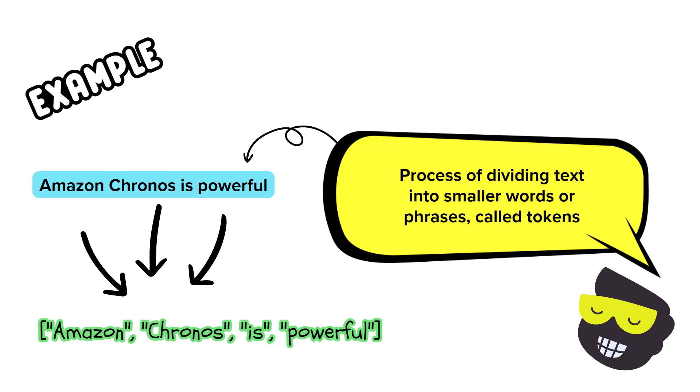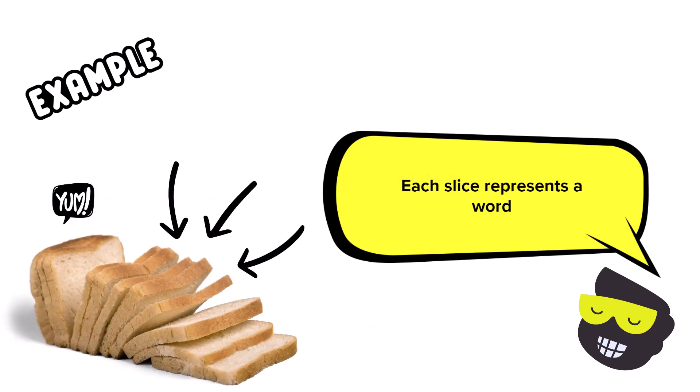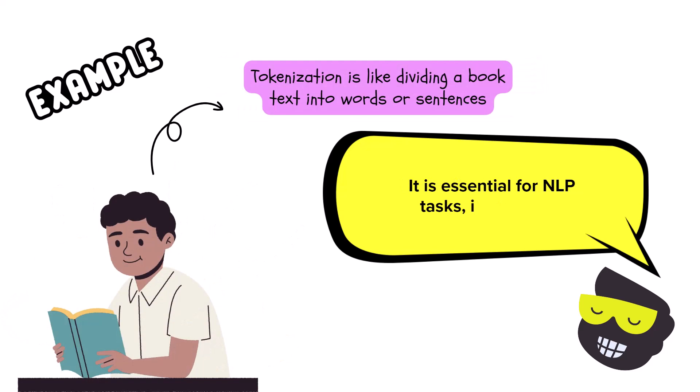Think of it like slicing a loaf of bread into individual pieces. Each slice, or token, represents a manageable piece of the whole text. Imagine that you're reading a book — tokenization is like dividing the text into individual words or sentences, making it easier to analyze and process. This step is foundational for many natural language processing tasks, or NLP, and that of course includes information retrieval.